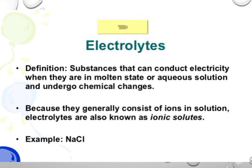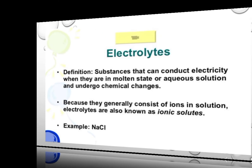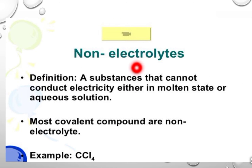The next definition is electrolyte. What is an electrolyte? The chemical compounds which conduct electricity in molten condition or through their aqueous solution with chemical changes are called electrolytes. They conduct electricity because they generally consist of ions in solution. An example of an electrolyte is NaCl.